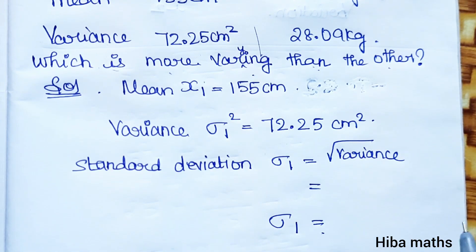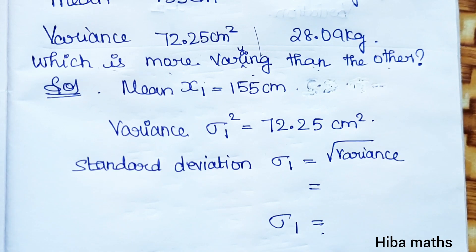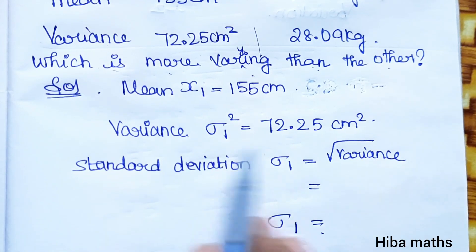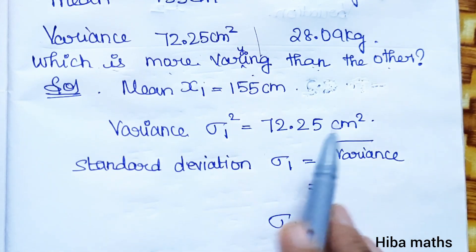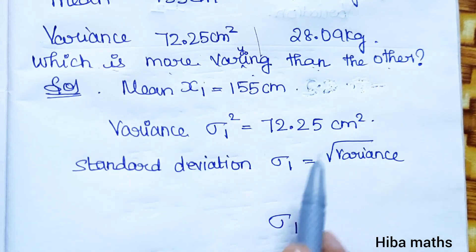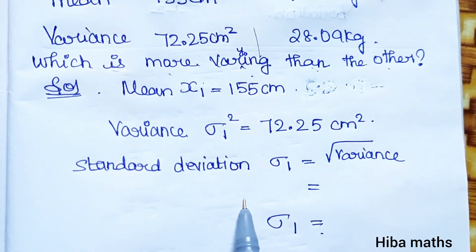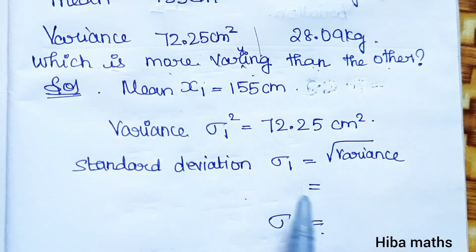To solve this, we use the coefficient of variance. Note that variance is not standard deviation — we need to find the standard deviation first, then compute the coefficient of variance.